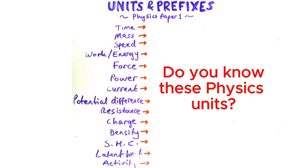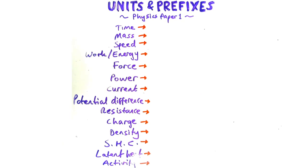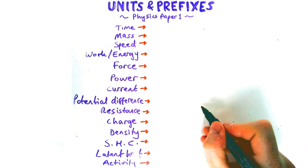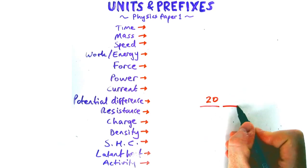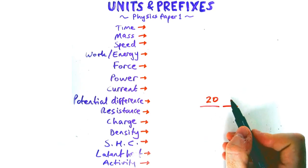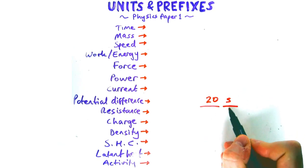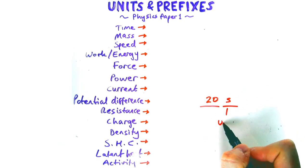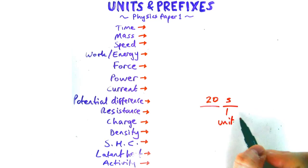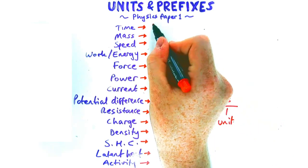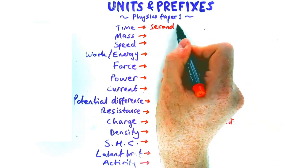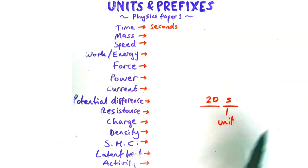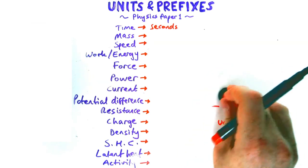You'll also need to know the units for all of these quantities. For example, if there's an answer that's got a numerical value, the unit comes after it — for example, 20 seconds. Time is always measured in seconds. If it's in minutes or hours, you need to be able to convert it into seconds.